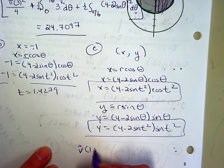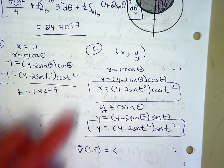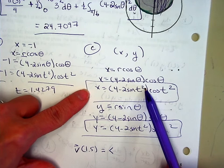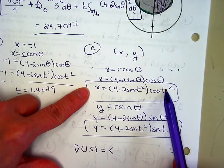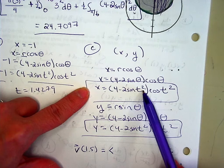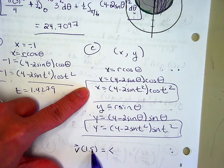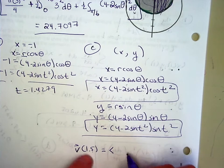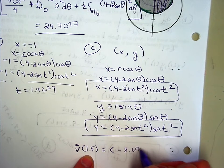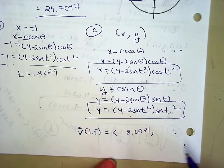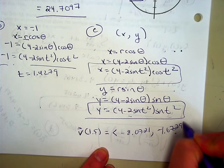So your velocity vector at 1.5, you're going to do with the calculator. It should just be the derivative of this. So type this in your calculator in y1. Have the calculator figure out the derivative of this and plug in 1.5 for that variable t. And I get -8.0721. You're going to do the same thing with the y component.